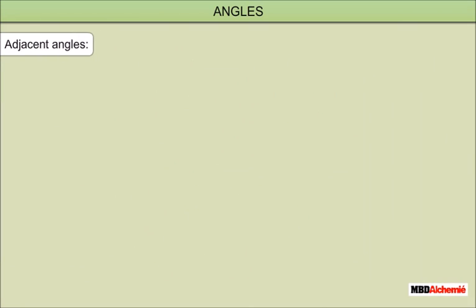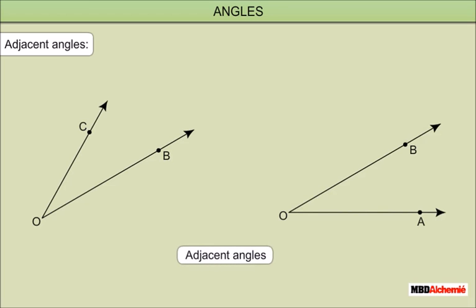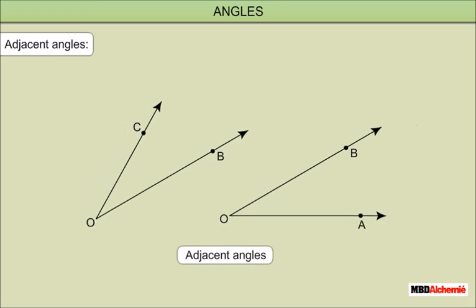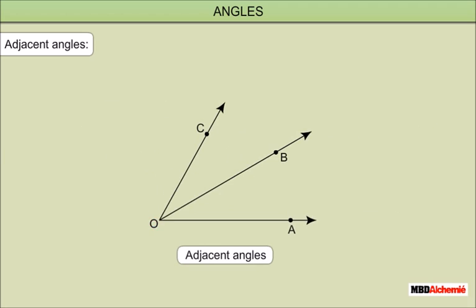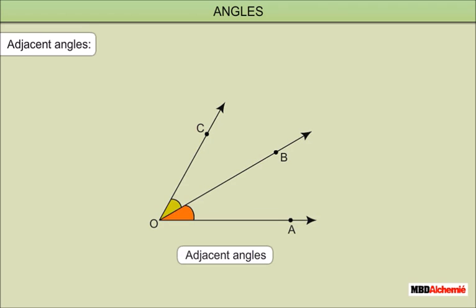Adjacent Angles: Two angles are said to be adjacent angles if they have a common vertex, a common arm, and their other arms lie on opposite sides of this common arm. For example, angles AOB and BOC are adjacent angles.